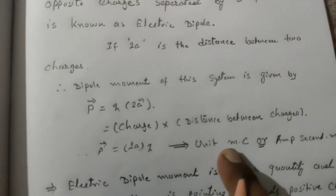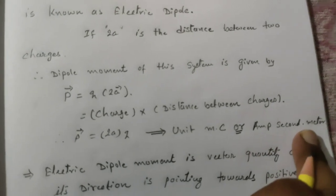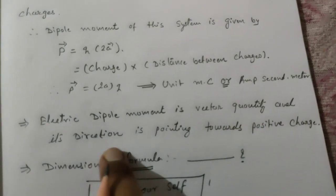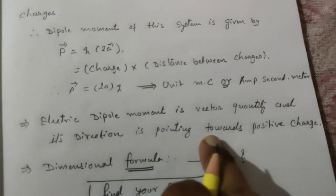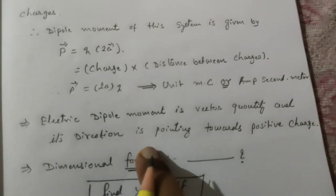The unit of this electric dipole moment is meter into coulomb, you can also say coulomb into meter, or another unit we have is ampere second into meter. Remember, since it is a vector quantity, its direction is always pointing towards its positive charge.